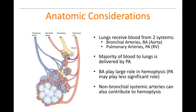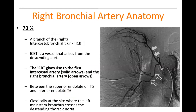Non-bronchial systemic arteries can also contribute to hemoptysis, because any of these conditions are going to recruit blood from wherever they can. Regarding right bronchial artery anatomy: 70% of the time, the right bronchial artery comes off an intercostal bronchial trunk off the aorta, usually located between the superior end plate of T5 and the inferior end plate of T6.